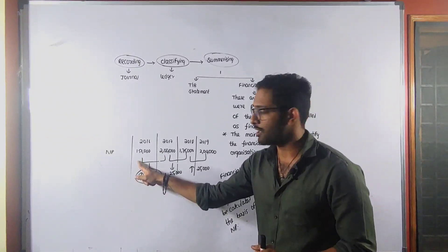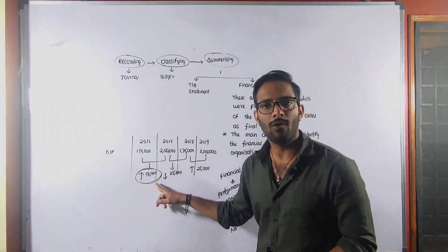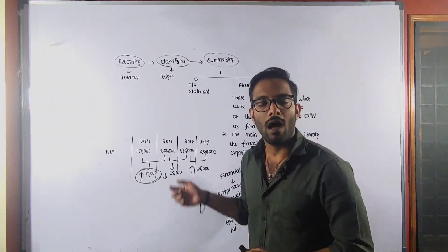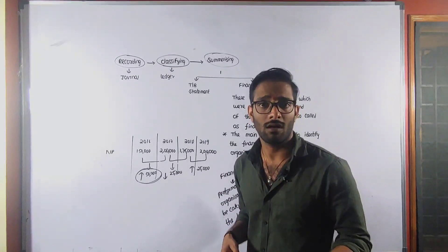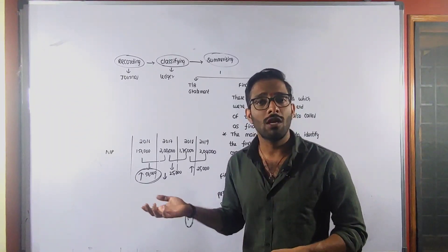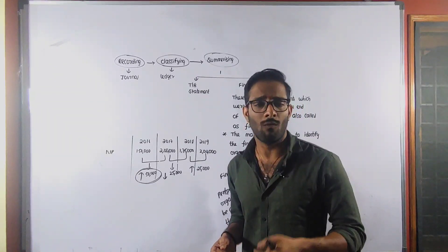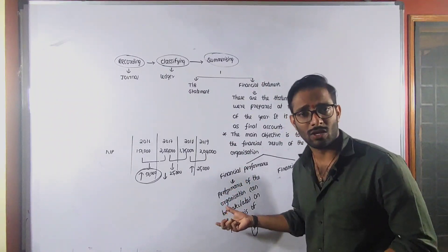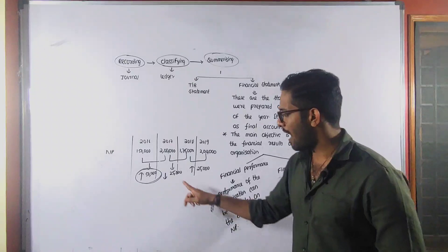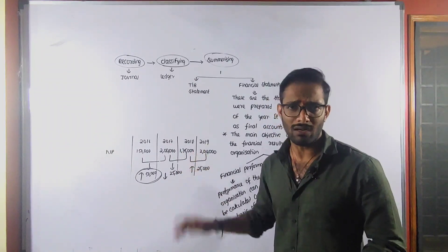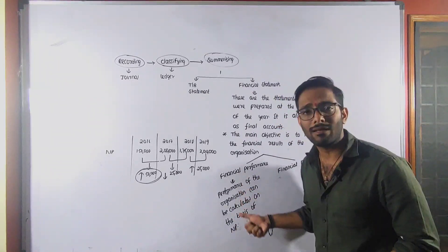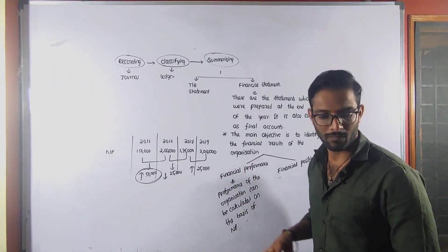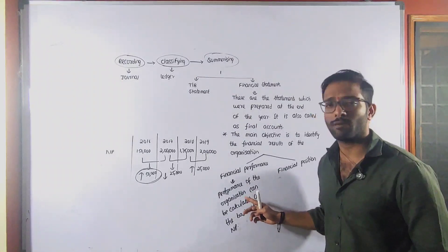Once again, comparing previous year to current year: if net profit increases, suppose sales increase and cost of goods sold decreases. Or in other situations, administration expenditure and selling and distribution expenditure all decrease — expenditure decreasing means the performance of the organization increases. If net profit decreases, then the performance of the organization decreases. So we can calculate the financial performance. I hope you can understand the meaning of financial performance with this example.